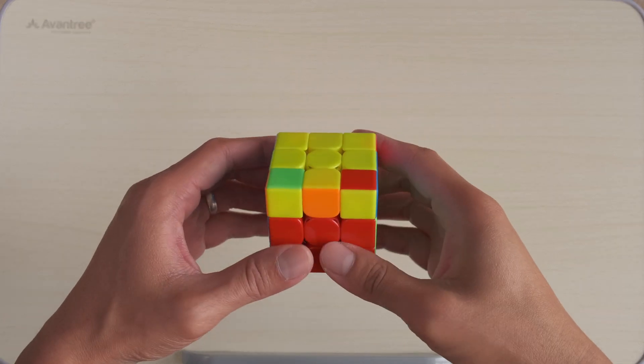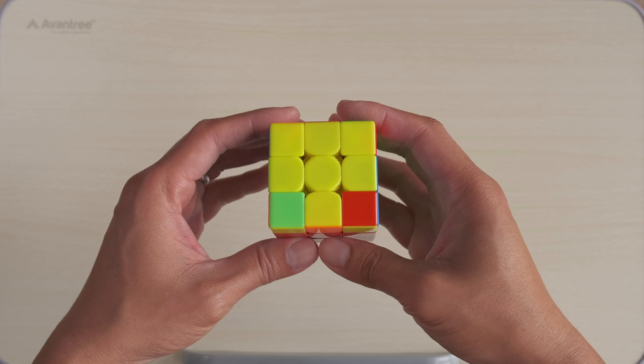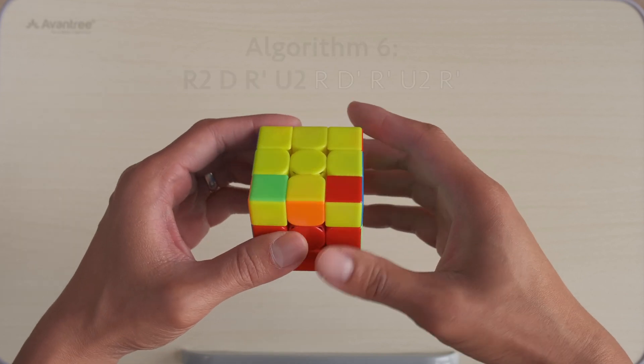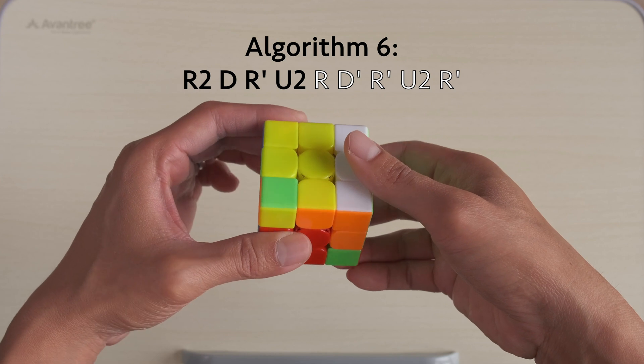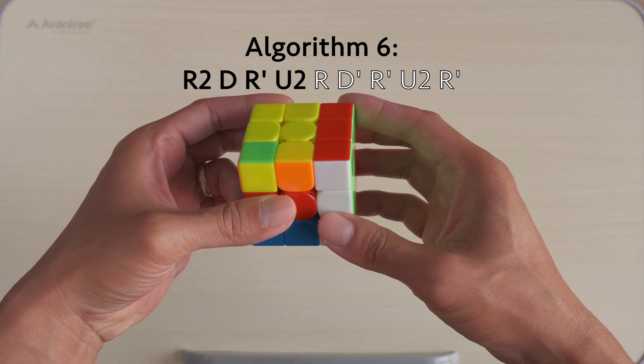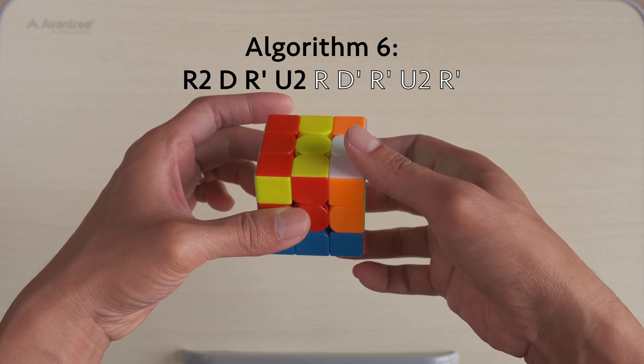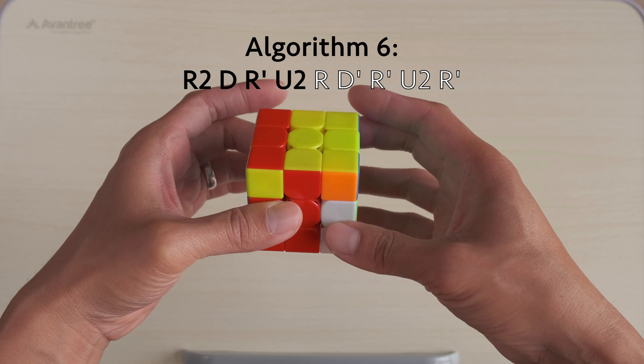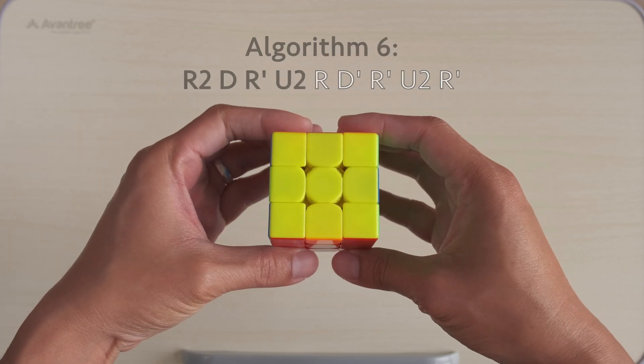Here we have the same pattern with headlights. We face the headlights towards us and do this algorithm: R2, D, R', U2, R, D', R', U2, R'.